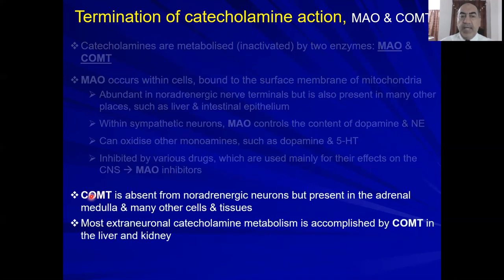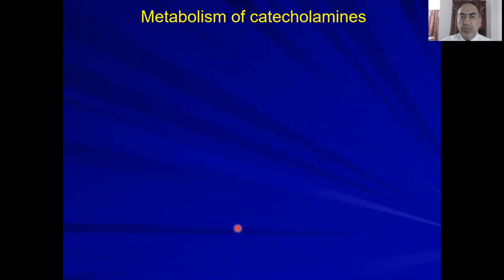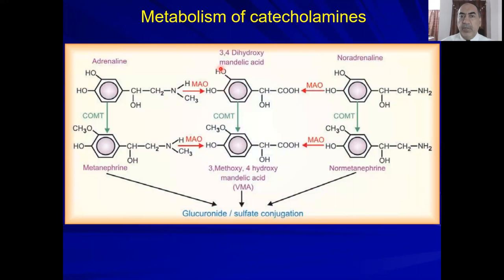The second enzyme is COMT — catechol-O-methyltransferase. MAO performs oxidation of catecholamines, whereas COMT — please note, the 'O' refers not to 'ortho' but to the oxygen, because it adds a methyl group to the oxygen. COMT is absent from noradrenergic neurons, unlike MAO which is mainly found there. Both enzymes are present in the adrenal medulla and many other tissues including liver and kidney. COMT is responsible for most of the extra-neuronal catabolism of catecholamines.